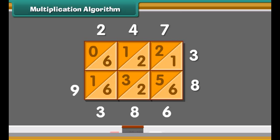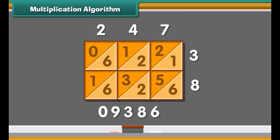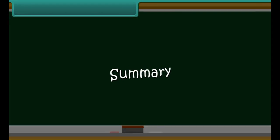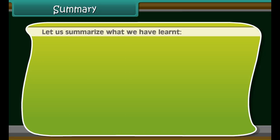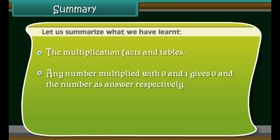Now start at the bottom and add down the diagonal strips. Write 6 as it is. 2 plus 5 plus 1 is 8. 6 plus 3 plus 2 plus 2 is 13 — a 2-digit answer, so write 3 below and carry 1 to the next strip. 1 plus 6 plus 1 is 8, add 1 carry to get 9. And 0 is 0. We get the answer 9386. Thus, 247 multiplied by 38 is 9386.